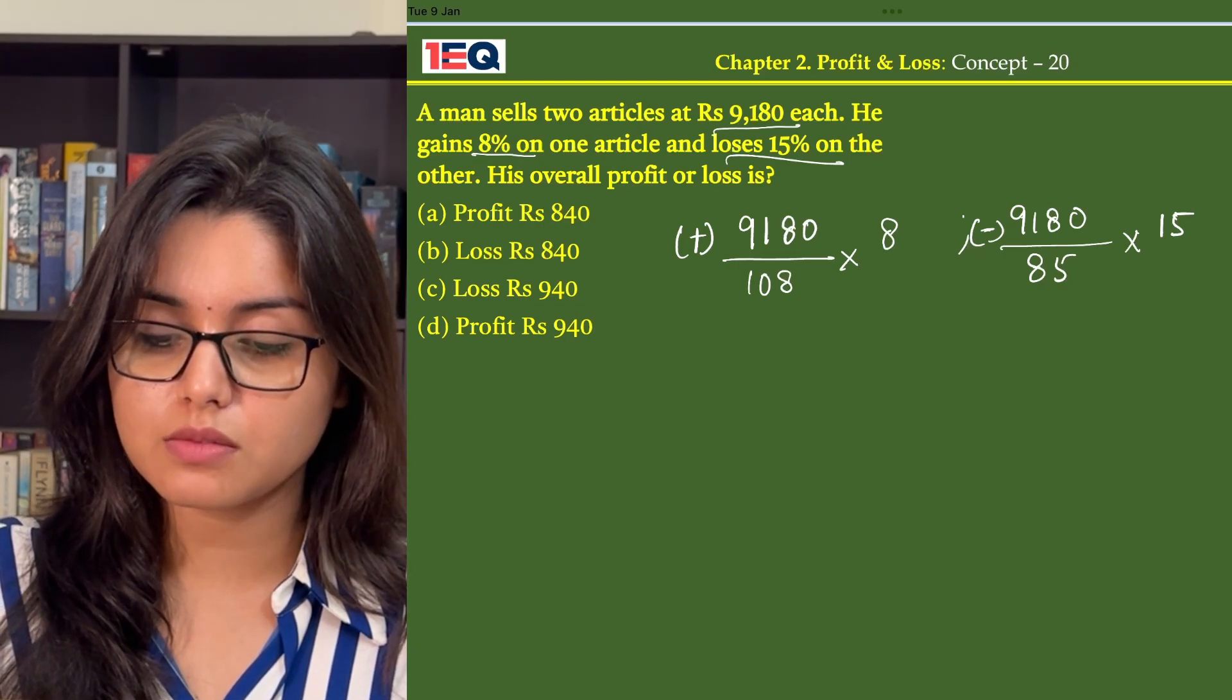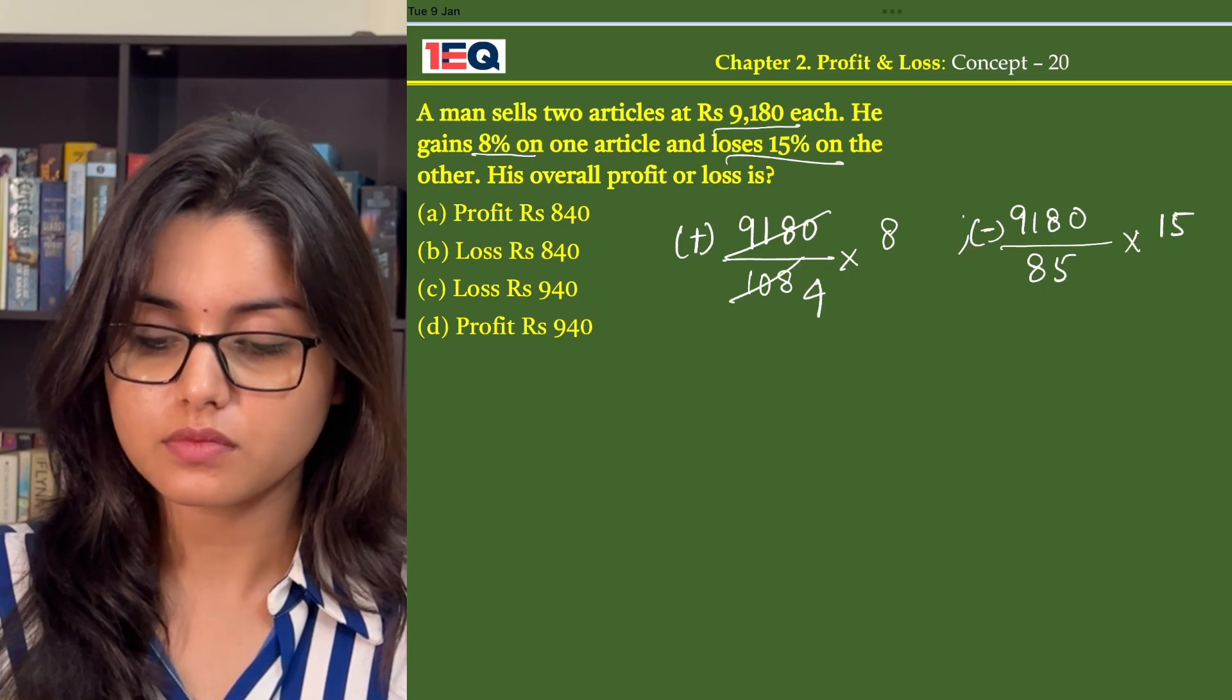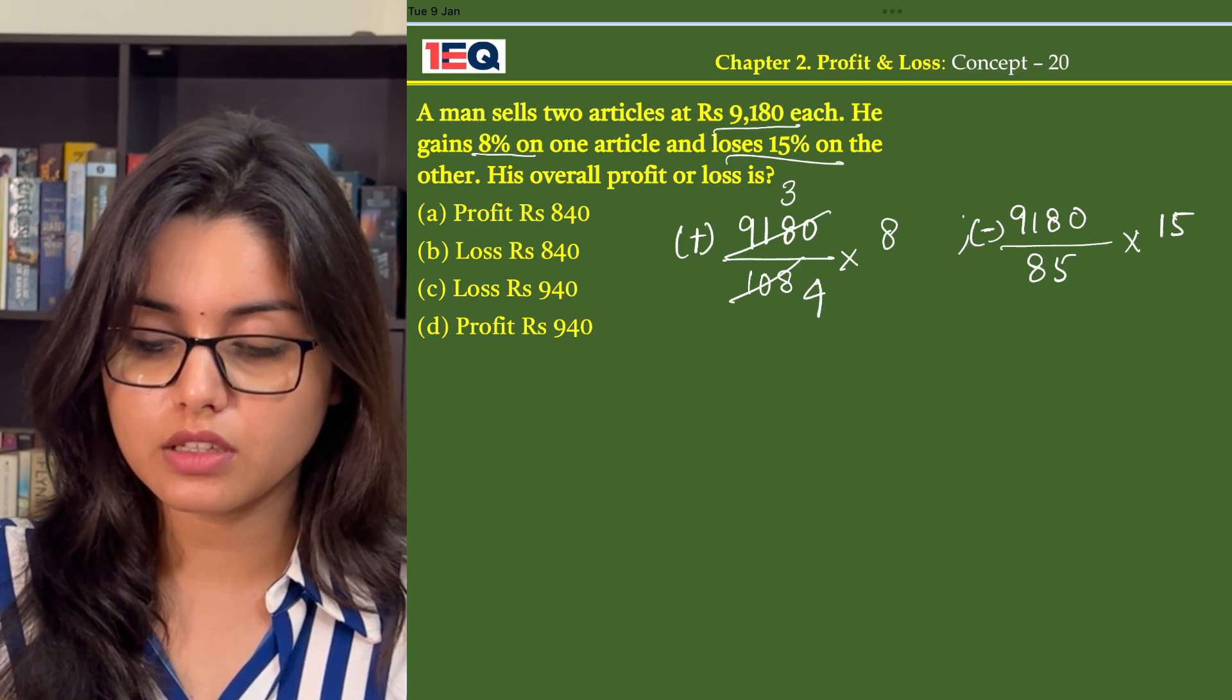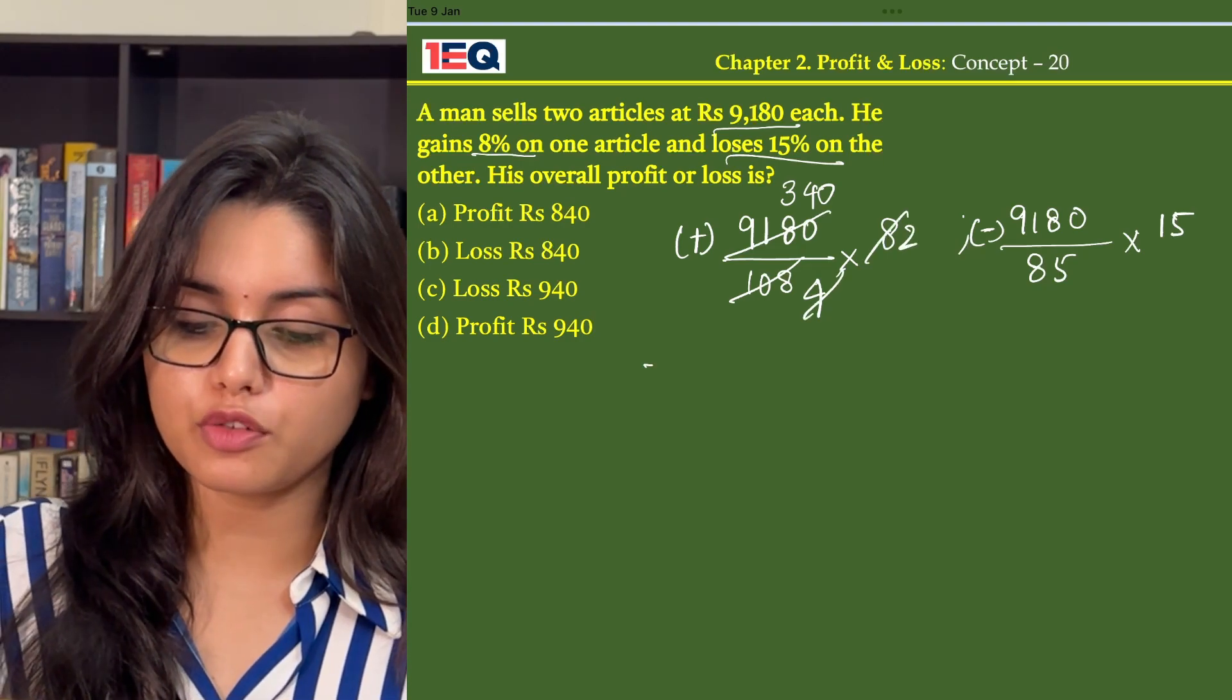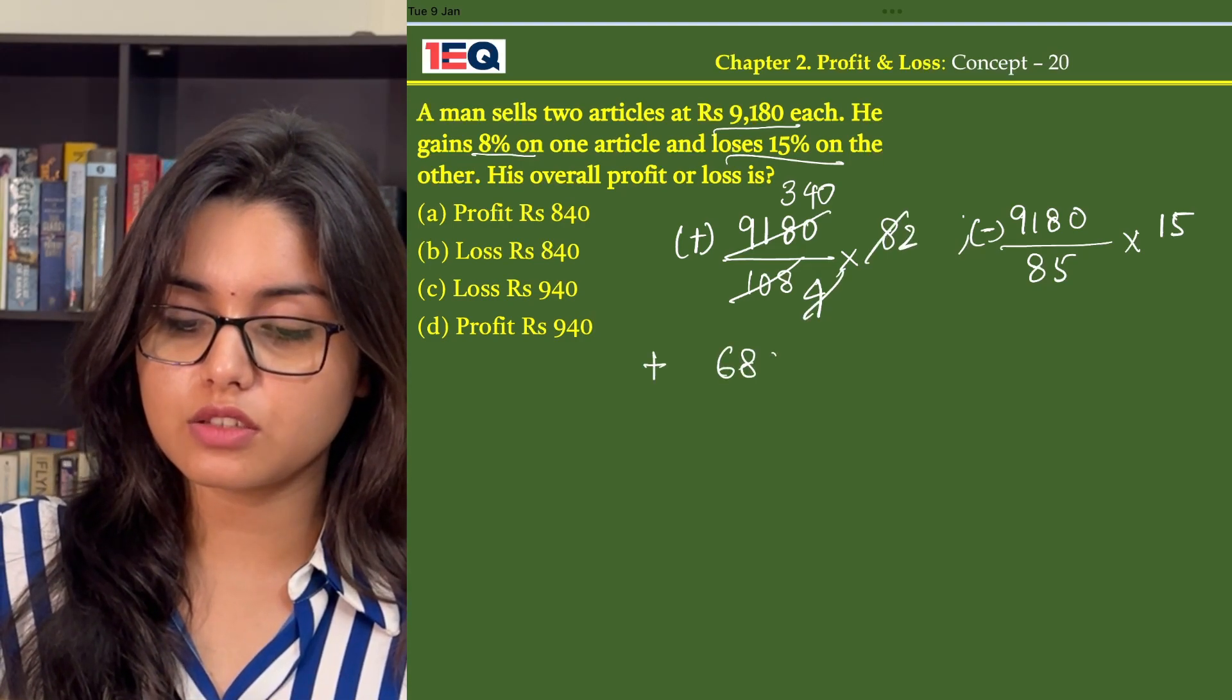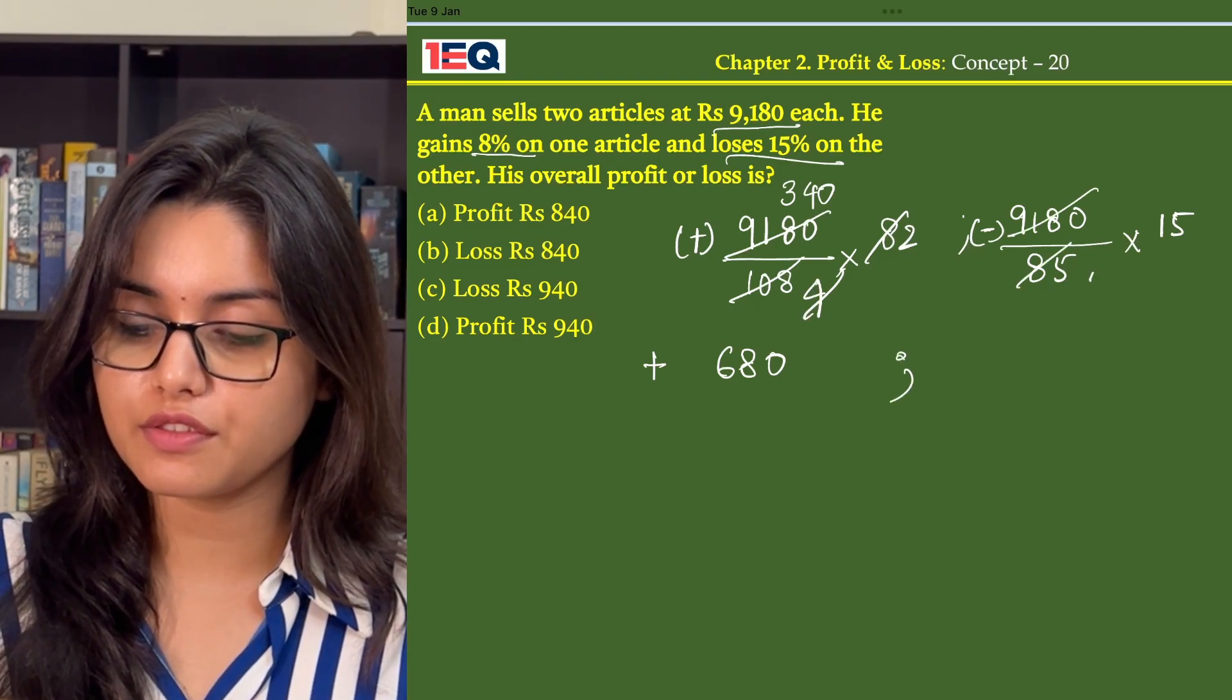Now dividing this by 27, we get 4, 3, 40 and this becomes 2. So profit is 680 rupees.